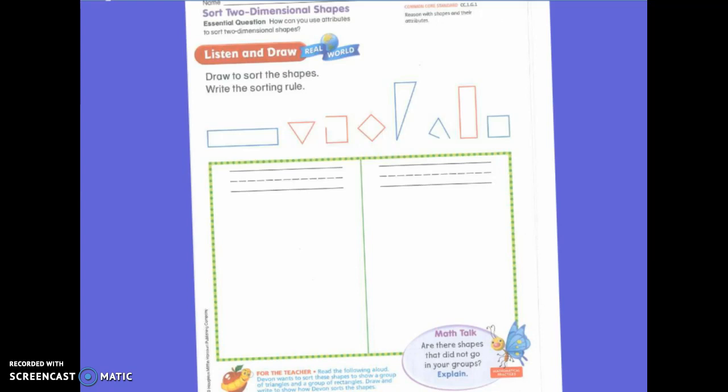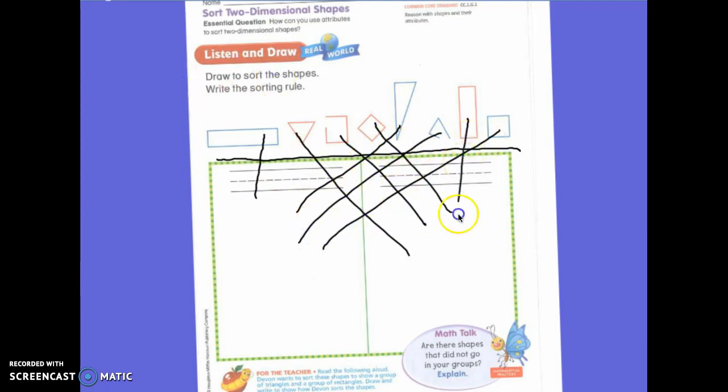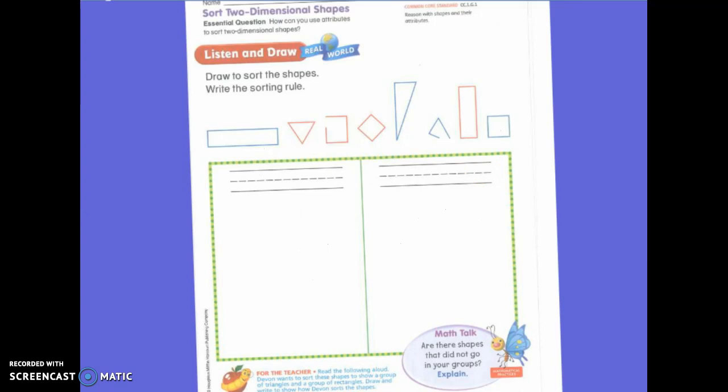How else could I have sorted these shapes? By the color. So I could have had blues in this box. I could have had reds in this box. And was there another way that we could have sorted? The rectangles are that long triangle and the other rectangles are like all long. I like it. We could have had long shapes and then short shapes. So we could have sorted it by size. You guys are exactly right.